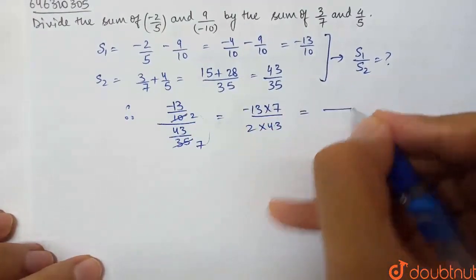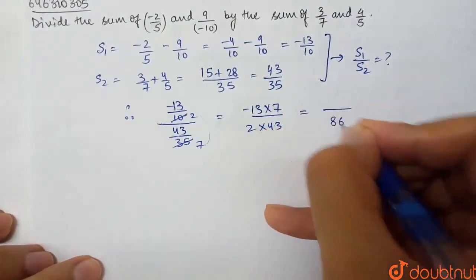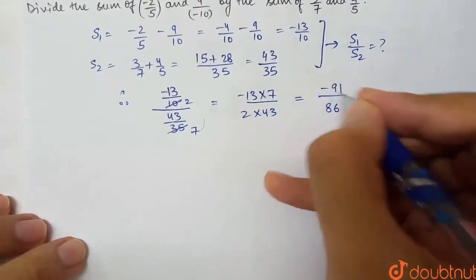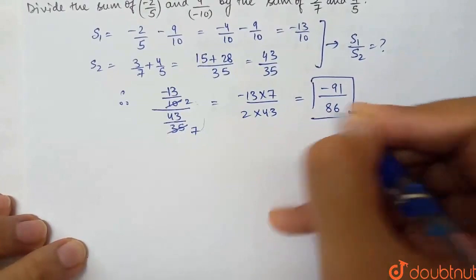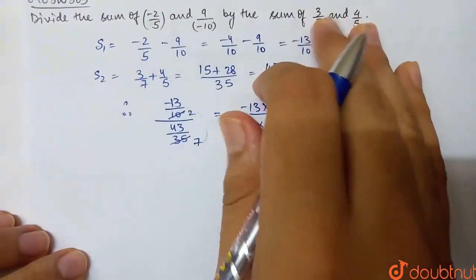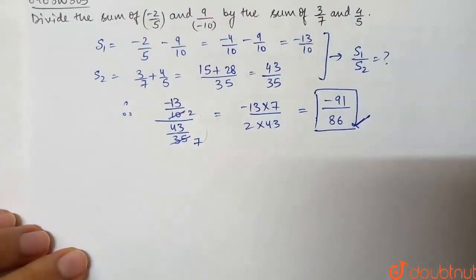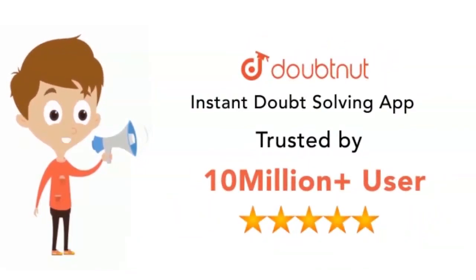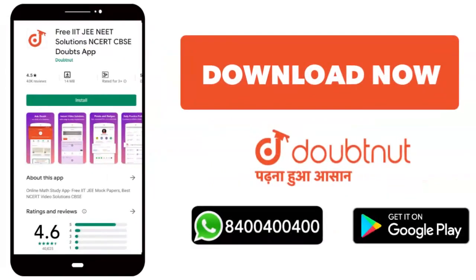So this will be 43 into 2 is 86, and 7 into 13, this will be basically 91. So minus 91 by 86. This will be the required value, that is, division of sum of this by this. Minus 91 by 86.